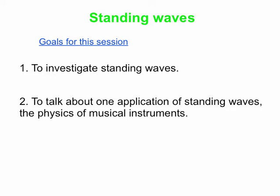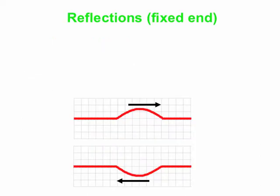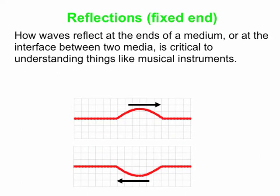We'll leave pipes and tubes to class. It's kind of important that we understand how things reflect. So if a pulse is moving to the right on a string, for instance, as shown in the top picture below, then it's going to hit the end of the string and reflect back in some way. And in fact what it does when it reflects is critical to understanding what happens in standing waves, which is critical to understanding things like how musical instruments function.